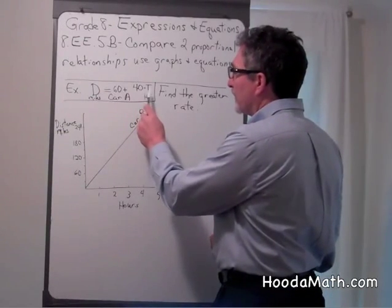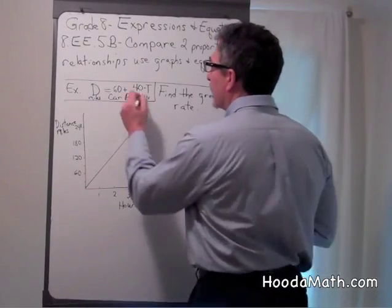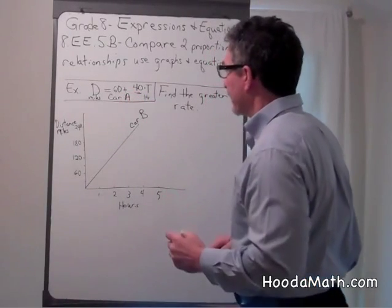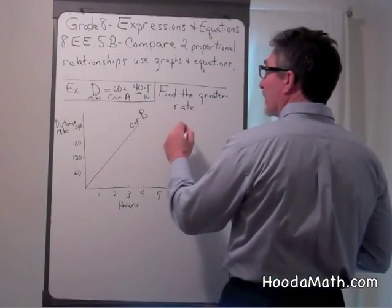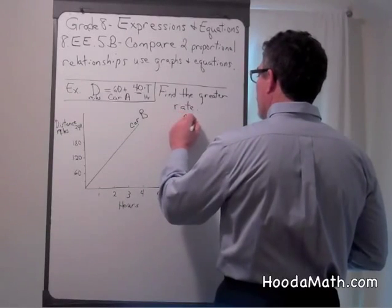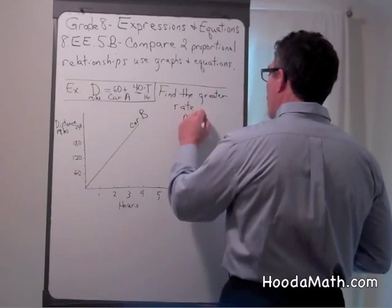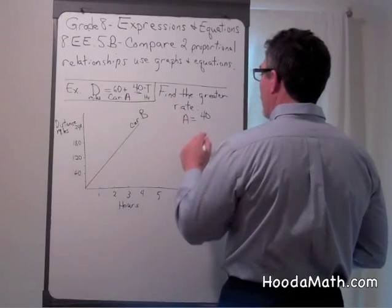The coefficient of t, 40, is the slope. So for car A, the slope is 40 miles per hour.